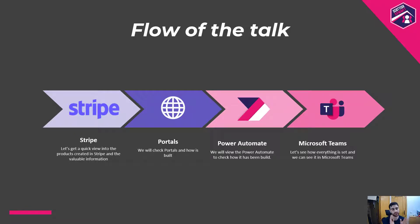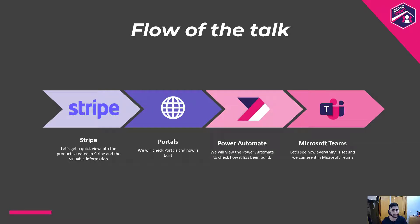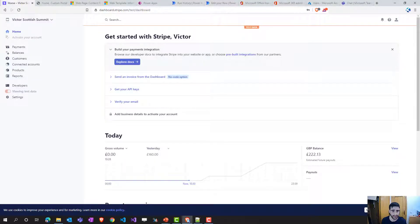So to summarize what we are going to see: first, we'll look at Stripe — the dashboard structure. Then we'll look at Portals — how it looks on the frontend and how the web templates and web pages are built on the backend. Then we'll move on to Power Automate — what the trigger is and all the steps. We'll even create a new Power Automate from scratch. And then we'll see how Microsoft Teams is set up.